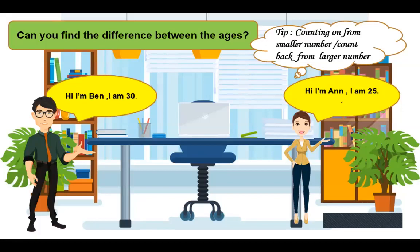Here look at the screen. Hi I am Ben, I am 30. Hi I am Ann, I am 25. So here you have to find the difference between the ages. So children, count on from smaller number. Here we will count from 25 to reach 30. Can you count with me?